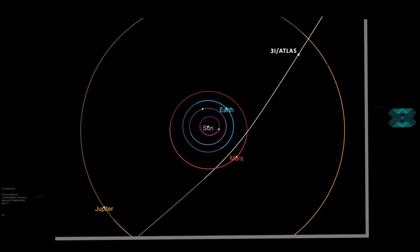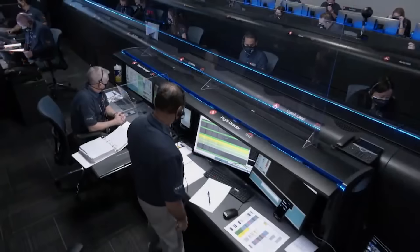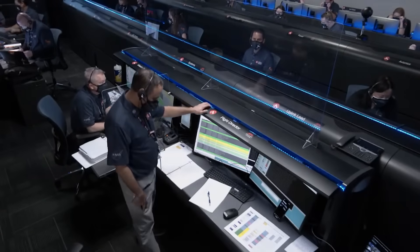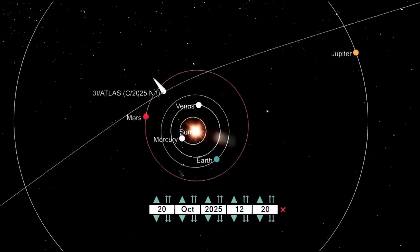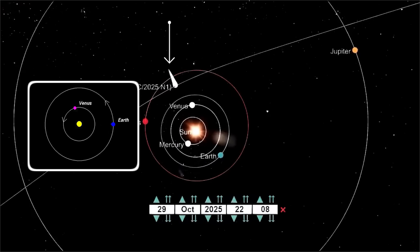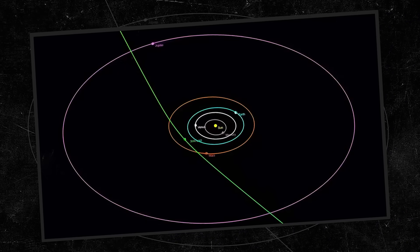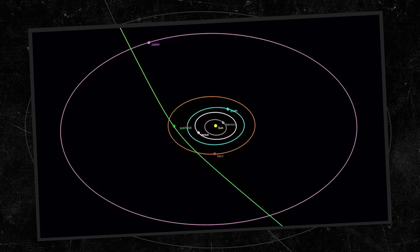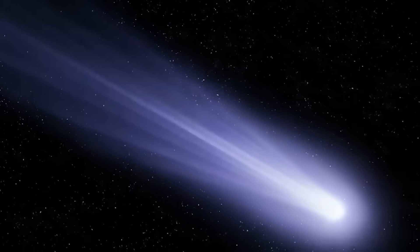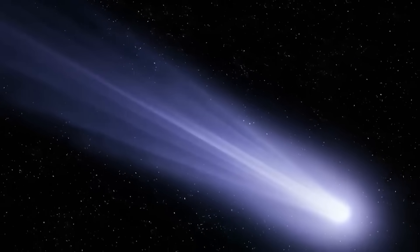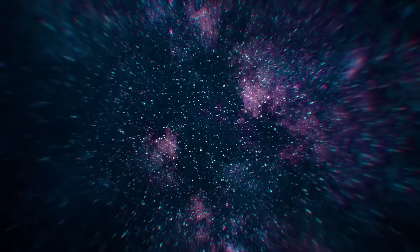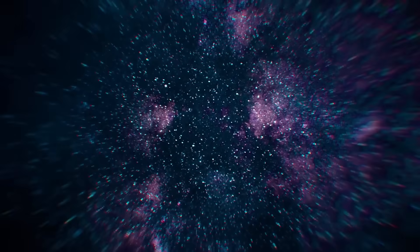Its orbit was just as shocking. In astronomy, an object's path is measured by its eccentricity. An eccentricity of zero is a perfect circle, like the orbit of Venus. An eccentricity of one is a parabola, an escape trajectory. The eccentricity of 3i Atlas was over six. This number screamed alien, not in the sense of little green men, but in its truest meaning, a foreigner, born in a star system far, far away.